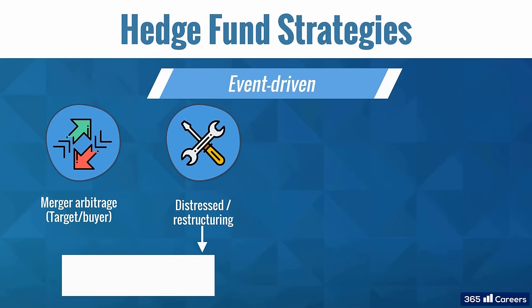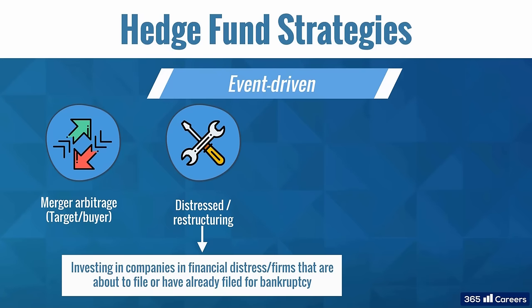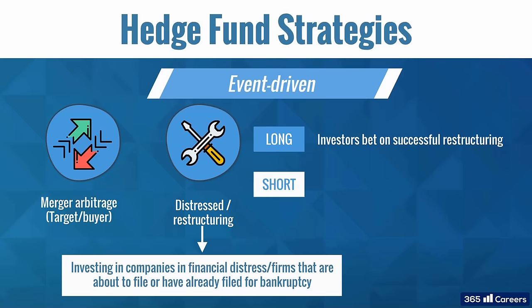Distressed or restructuring strategies involve investing in companies in financial distress, or in other words, firms that are about to file or have already filed for bankruptcy. Fund managers may choose to take a long or short position in the debt or equity securities of the distressed company. When taking a long position, they bid on a successful restructuring, buying the company's securities at a discount and expecting to profit from a price recovery. A short position is expected to be profitable in case of an unsuccessful restructuring. When going short, fund managers usually pick securities with lower investor protection, such as junior debt or common stock. These two approaches can also be combined by simultaneously taking a long position in senior debt and a short position in junior debt or equity, expecting to profit from an increase in the price spread between the two classes of securities.